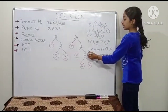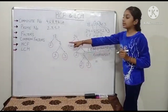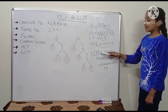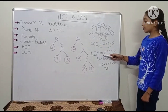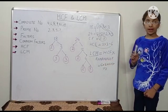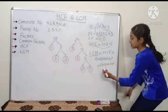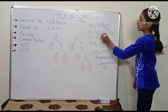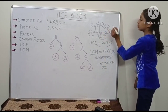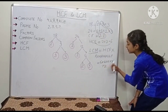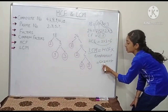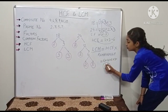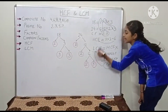Now LCM. In LCM, there is a formula in which we multiply the HCF and the remaining factors. Here the HCF is 6, and the remaining numbers are 2, 2, and 3. So 6×2=12, 12×2=24, 24×3=72. Therefore, 72 is the LCM.